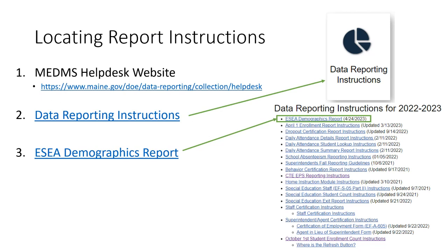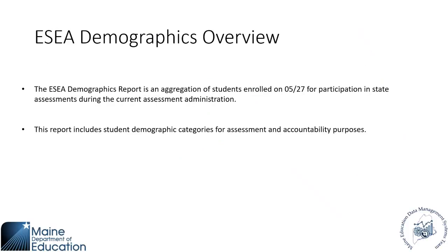On the data reporting instructions page, you'll be looking for the ESEA demographics report. Right now it is currently right at the top — we just updated it so it's right there ready to go for you. The ESEA demographics overview: this is an aggregation of students enrolled on 5/27 for participation in state assessments during the current assessment administration. We are looking at students who are enrolled on that 5/27 for the district full year report. This report includes student demographic categories for assessment and accountability. These are the reports that feed those numbers on the ESEA dashboard.